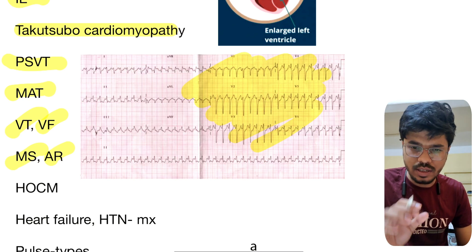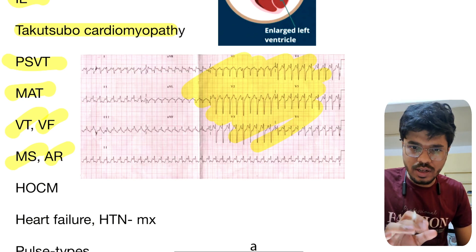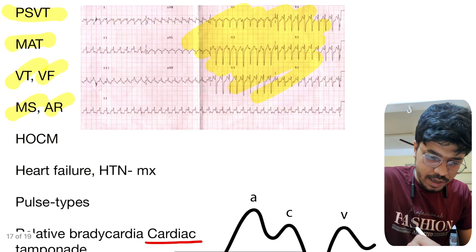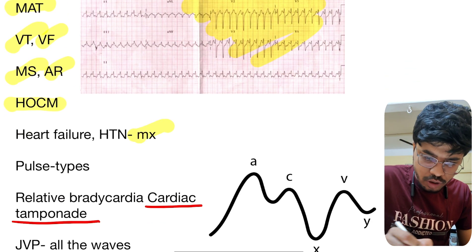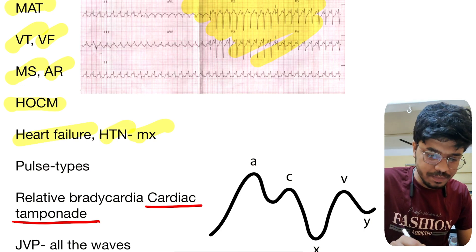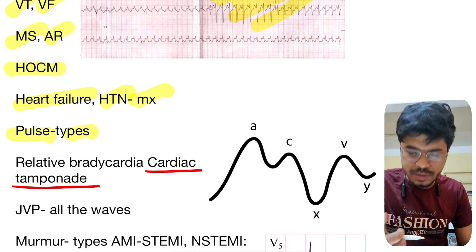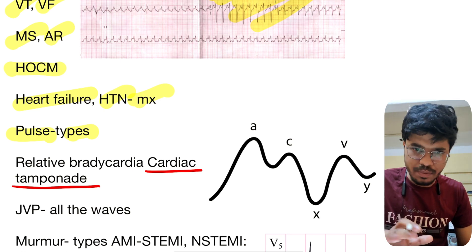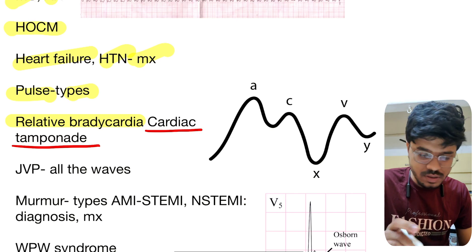MS — mitral stenosis — and AR — aortic regurgitation. The peripheral signs in aortic regurgitation are very important. HOCM is again an important topic. Management of both heart failure and hypertension. Pulse types — pulsus bisferiens, pulsus paradoxus, pulsus alternans — all types of pulse, including relative bradycardia and its causes.